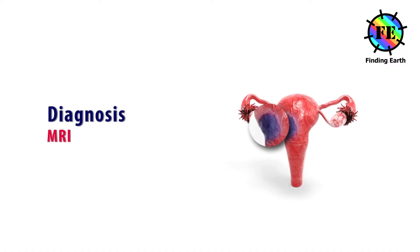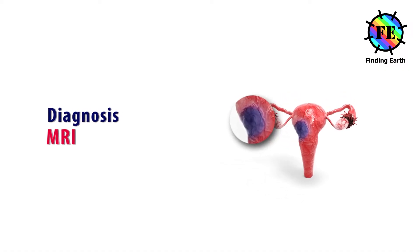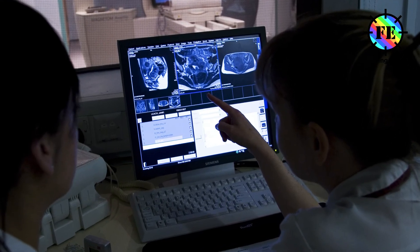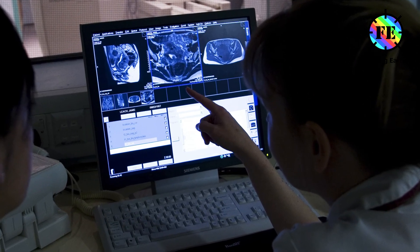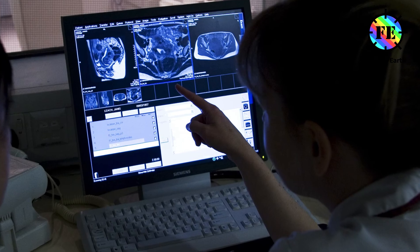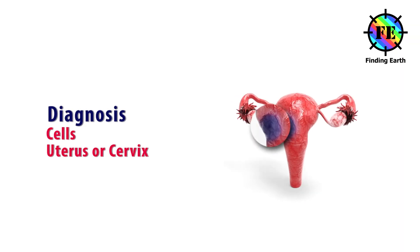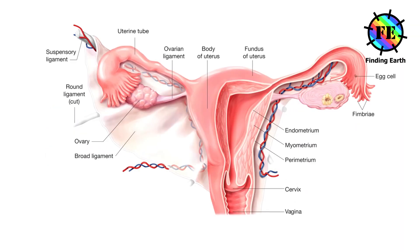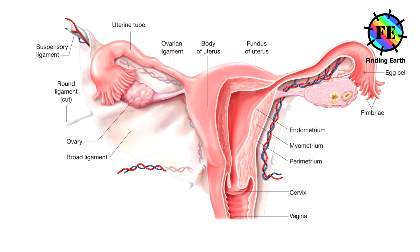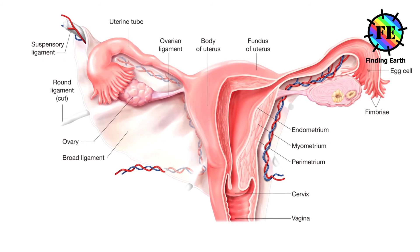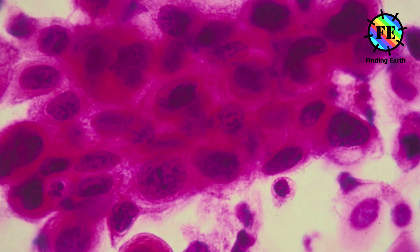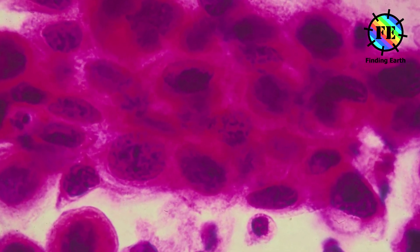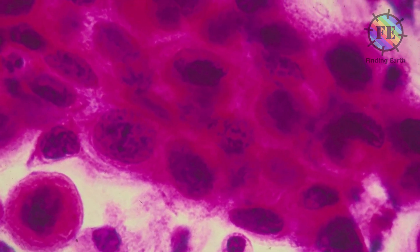MRI (Magnetic Resonance Imaging) scan: Magnets and radio waves produce two-dimensional and three-dimensional pictures of the target area. Testing cells from the uterus or cervix: Using partial-wave spectroscopic microscopy, it is possible to detect diagnostic changes in cells from the cervix or uterus taken from ovarian cancer patients.